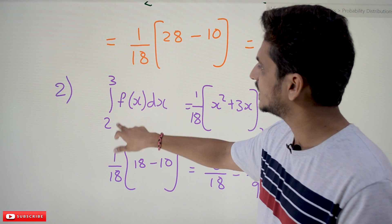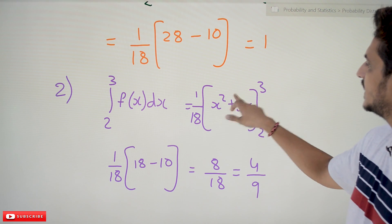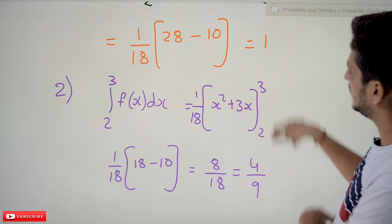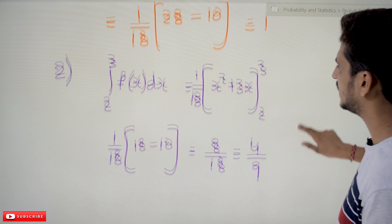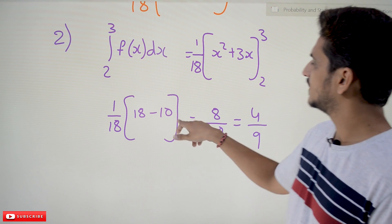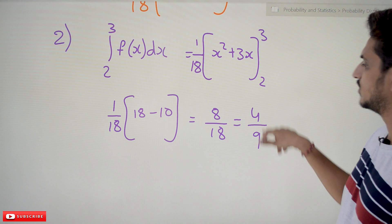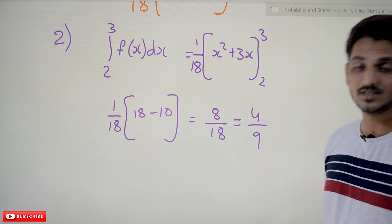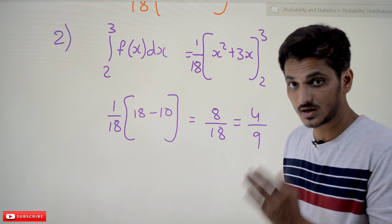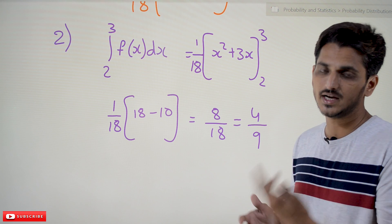For the second question, we find the area between 2 and 3: (1/18)[x² + 3x] evaluated from 2 to 3. That gives (1/18)(18 − 10) = 8/18, which simplifies to 4/9. This is the probability value under the limits 2 to 3.